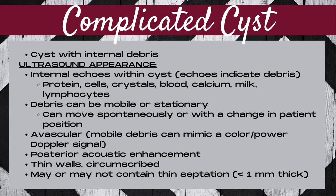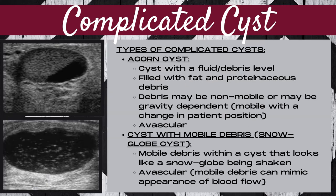A complicated cyst should have posterior acoustic enhancement. It should have thin walls and be circumscribed, and may or may not contain thin septations that are less than one millimeter thick.